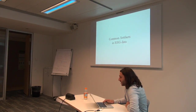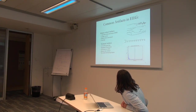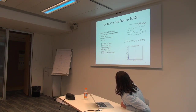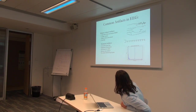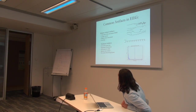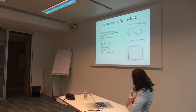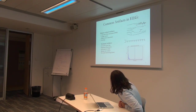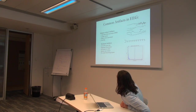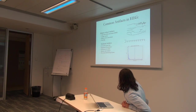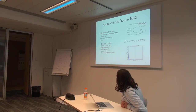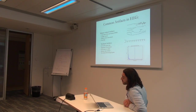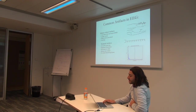Common artifacts in EEG data fall into two categories. Subject-related artifacts include minor body movements, cardiac activity, blinks, eye movements, and sweating. Technical artifacts include power line noise at 50 Hz in Europe or 60 Hz in the US, impedance fluctuations from electrodes, cable movement, broken wires, and issues with too much electrode paste or gel causing different kinds of artifacts.